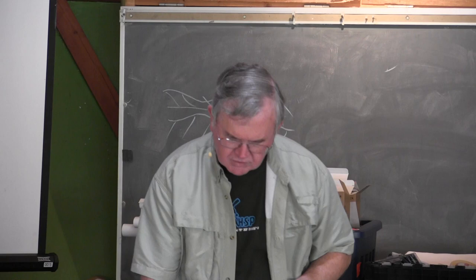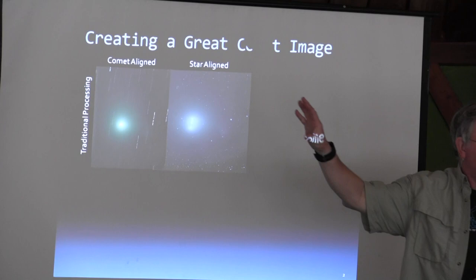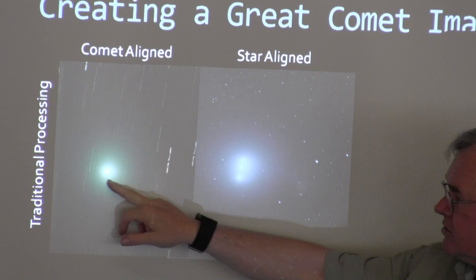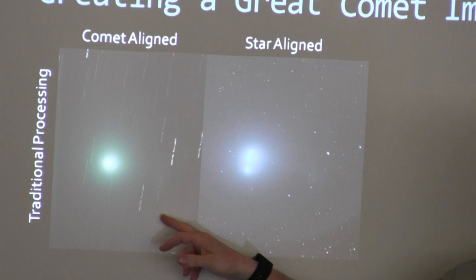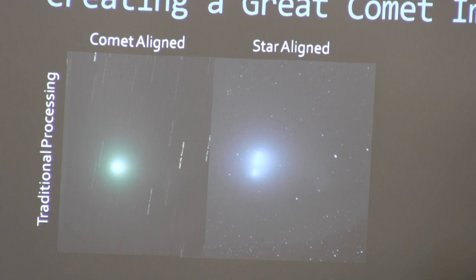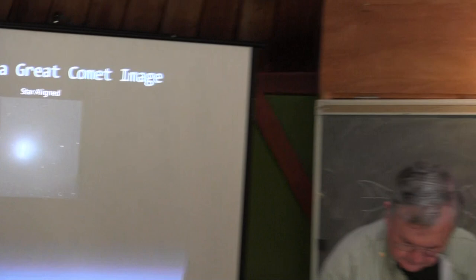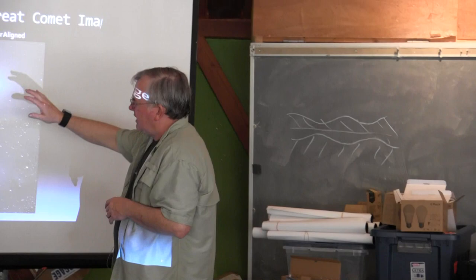I love taking pictures of comets, but there's a difficulty. If you take a picture of a comet, the comet moves as you take your series of pictures. So if you stack all the pictures on the head of the comet, then the stars are shown as moving. And if you stack all your pictures on the stars, then the comet moves. You can't really get a good picture of both the stars and the comet unless you do some pretty amazing things.